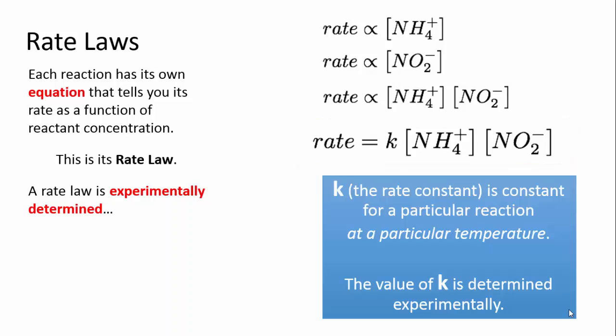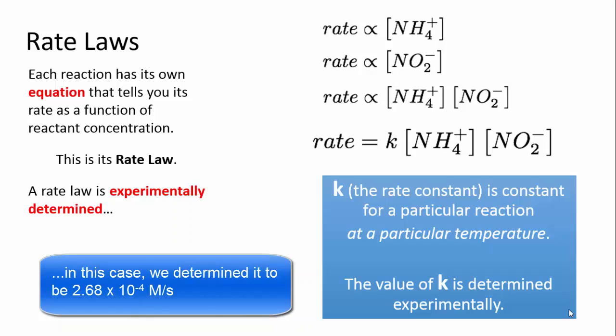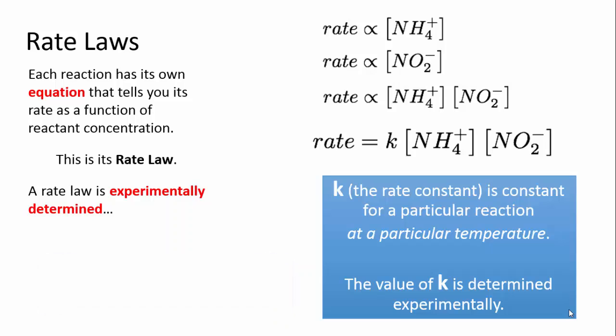The constant that converts the expression to an equation is called the rate constant and it's unique to a reaction at a particular temperature. It will change if the temperature changes because, as we know, temperature affects the rate of reaction. But we're going to go into that later. The rate law now shows the relationship between the reaction rate and the concentrations of the reactants.